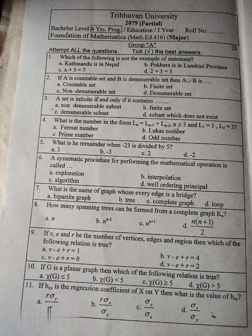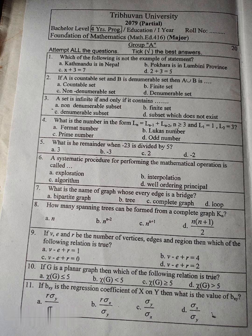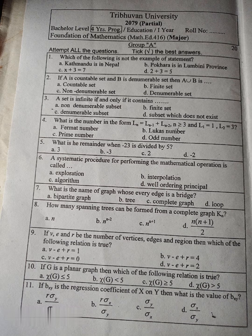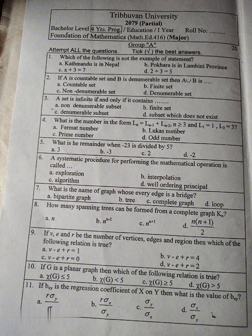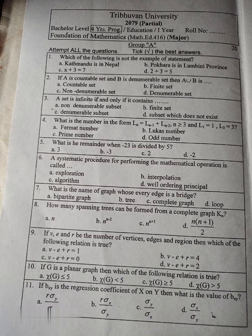Question number 3: A set is infinite if and only if it contains... A. non-denumerable subset, B. finite set, C. denumerable subset, D. subset which does not exist.